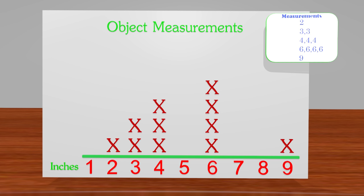This is awesome guys, we just made a line plot that shows the measurements of the objects that I had. When we see a mark above a number, it tells us how many times that number occurs. For example, we can see that above the 4 we see three x's, which means there were three objects that measured 4 inches long.